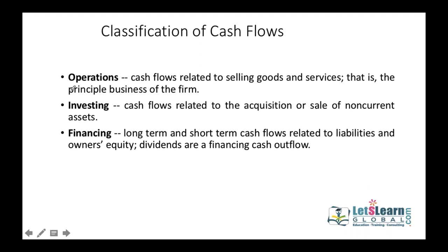The cash generated from operations concentrates only on the core operations of the business. For a retail business, buying and selling of goods — all cash used to buy and all cash received while selling — is mentioned under operating activities. For investing activities, we concentrate on whether fixed assets of the business increased or decreased.